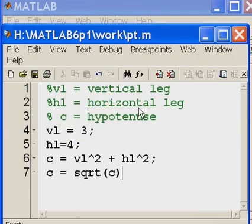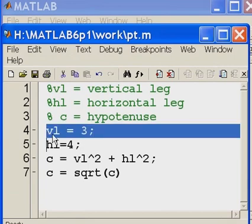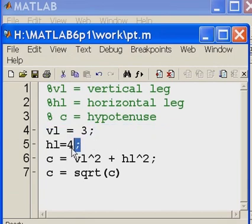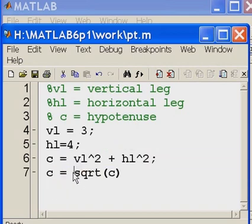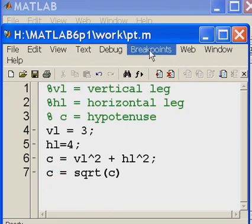So that was VL equals vertical leg. HL equals horizontal leg. C equals hypotenuse. VL equals 3. Semicolon. Don't echo it onto the screen. HL equals 4. Don't echo it onto the screen. VL squared plus HL squared is assigned to c. C is assigned the square root value of itself. And that's assigned back to c, of course. And that's it. That's our program.